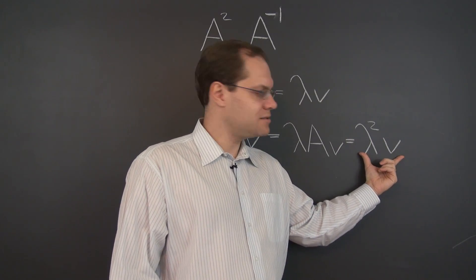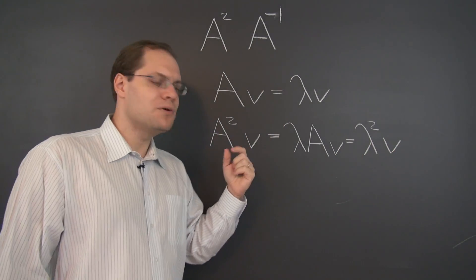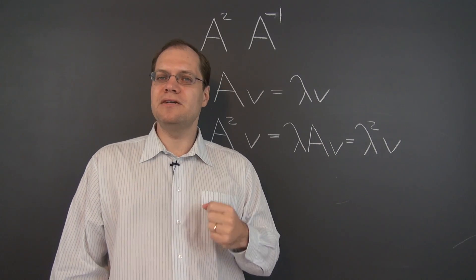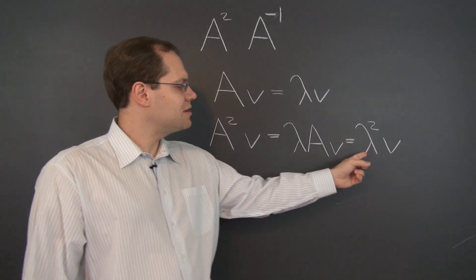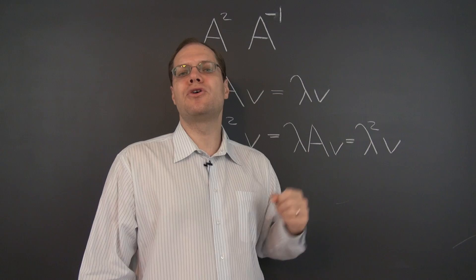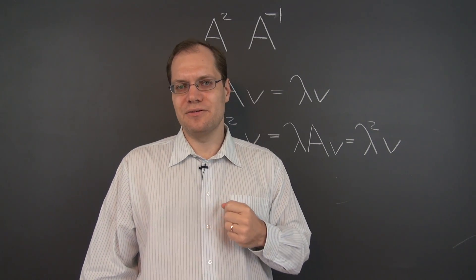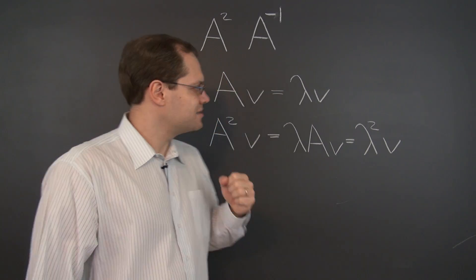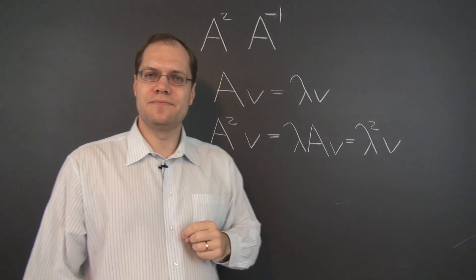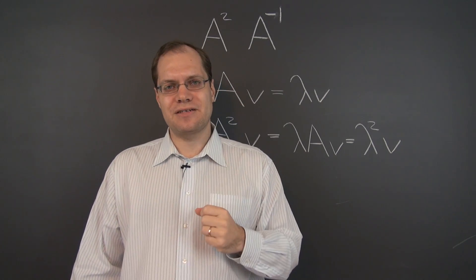So what this equation tells us is that V remains an eigenvector of the matrix A squared with lambda squared, the corresponding eigenvalue. So what we can say is, in summary,